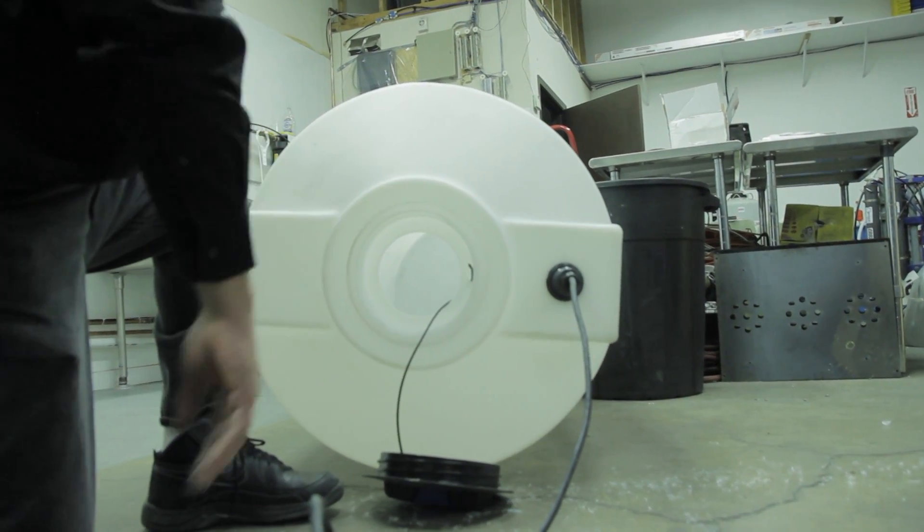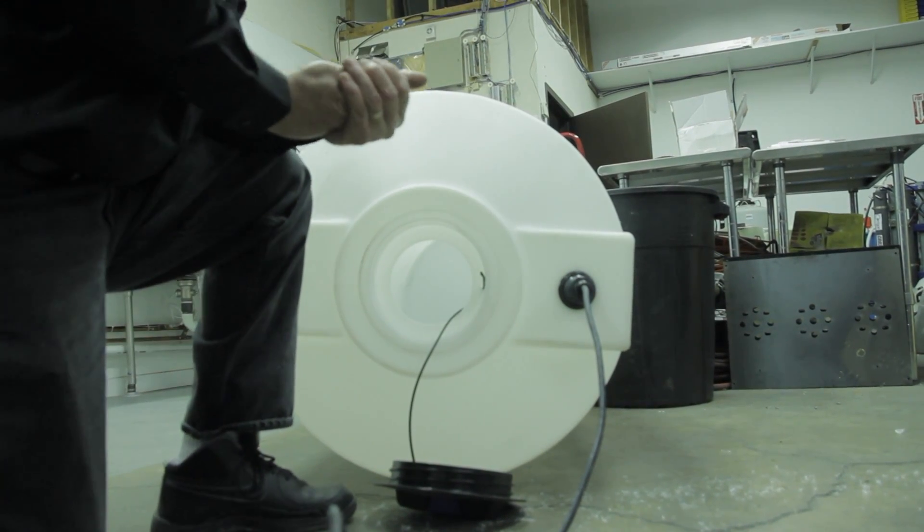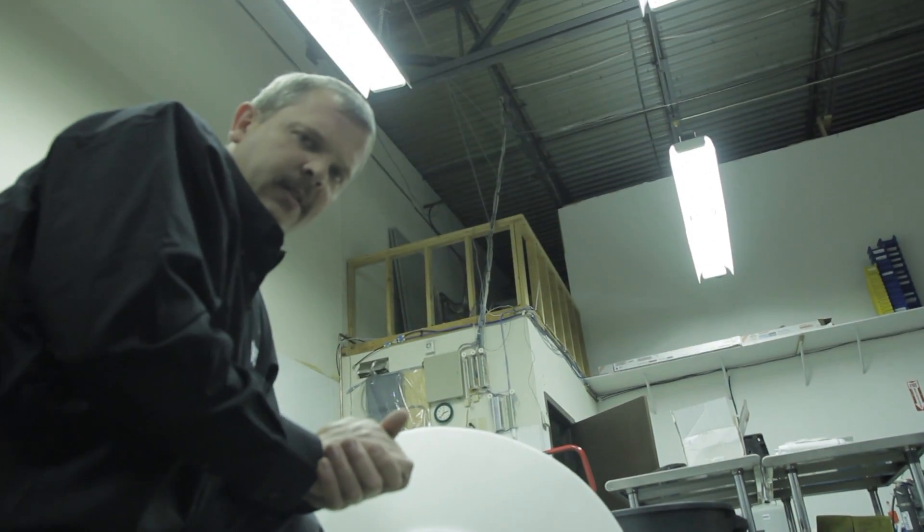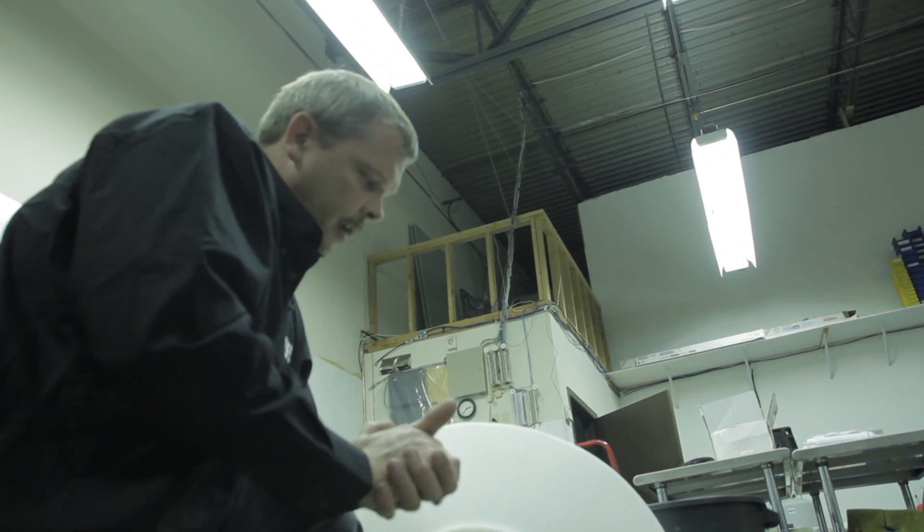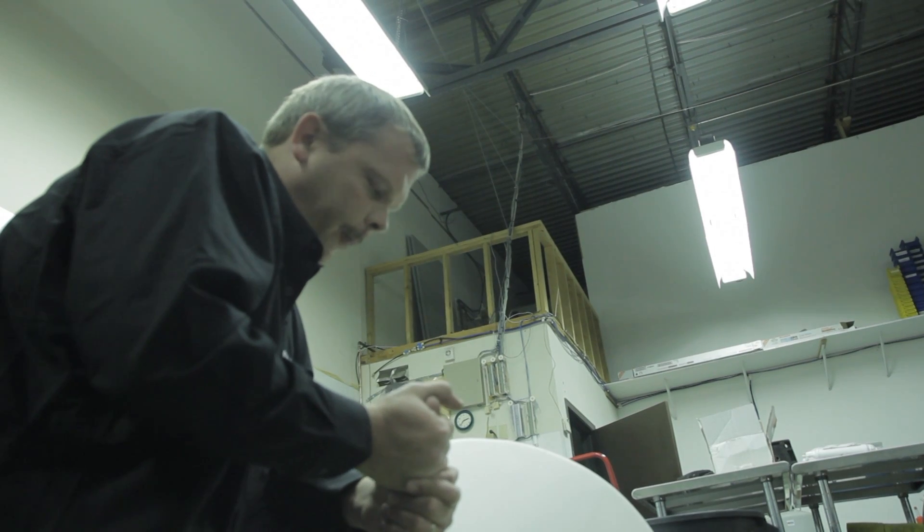Once the float is installed in the tank, if your float was shipped with a shipping cable tie, you're going to want to cut that tie off and get it out of your way. Otherwise, the float won't operate properly.